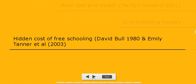Even though the government provides free education, there is a hidden cost of free schooling. According to David Bull, there is a cost to pay for free schooling, meaning there are many items students need to buy for school. Children from poor families cannot afford the same equipment. Emily Taylor stated there is a heavy burden on poor families caused by the cost of things like uniforms, books, computers, school trips, and art equipment.